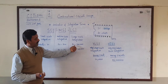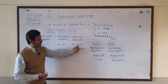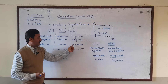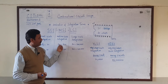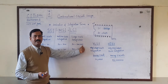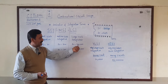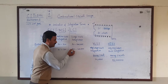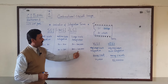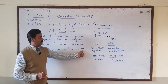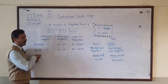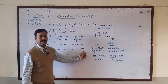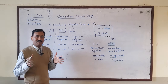Then there is Large Scale Integration. There are only about 500,000 components — that does not mean the physical size is large. These are about 300,000 components that make up a large scale IC, which is about 100,000 components per chip.